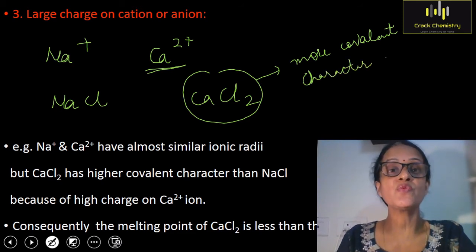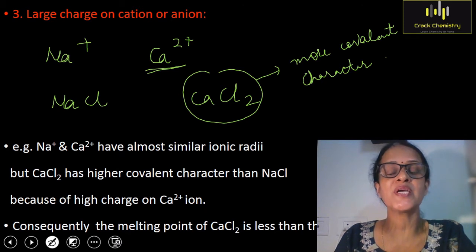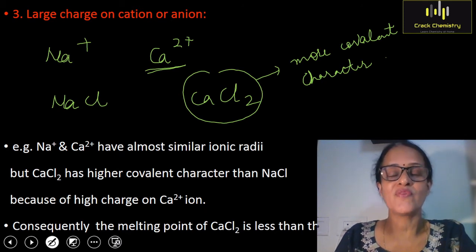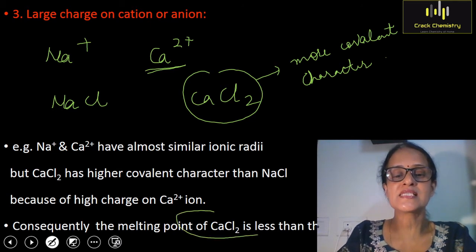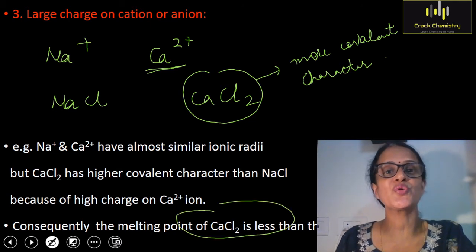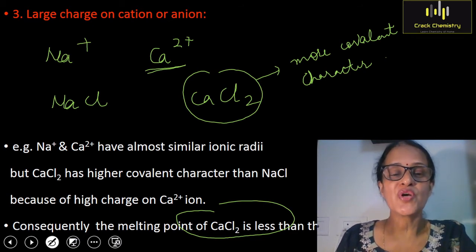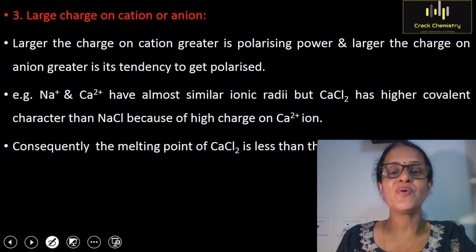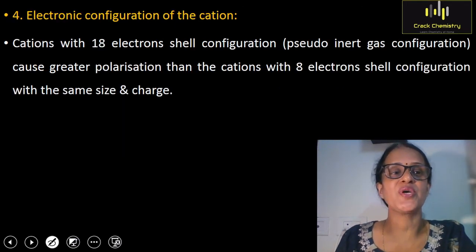You can verify that CaCl2 has more covalent character because an ionic compound has a higher melting point than a covalent compound. The melting point of calcium chloride is lesser than the melting point of sodium chloride. Whatever points I have explained are written in this slide.